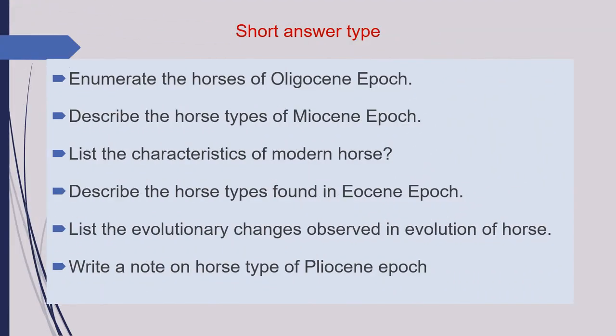The second category of questions are short answer questions and you have to answer these questions in a single paragraph. Question number one is: enumerate the horses of Oligocene Epoch. Question number two is: describe the horse types of Miocene Epoch. Third question is: list the characteristics of modern horse. Next is: describe the horse types found in Eocene Epoch.